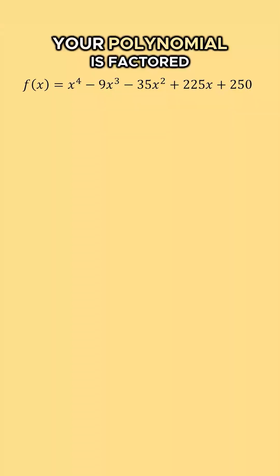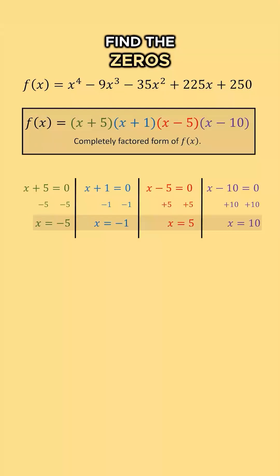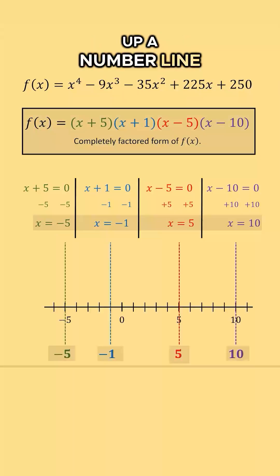First, you want to make sure that your polynomial is factored completely. You want to then find the zeros of your factored form and use those zeros to break up a number line into sections.